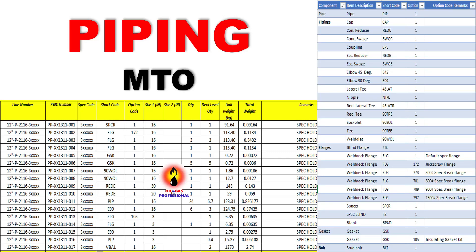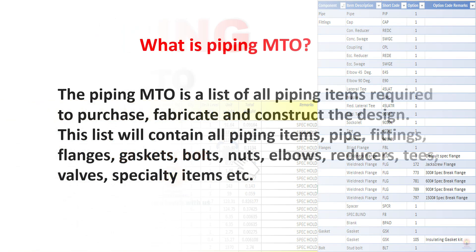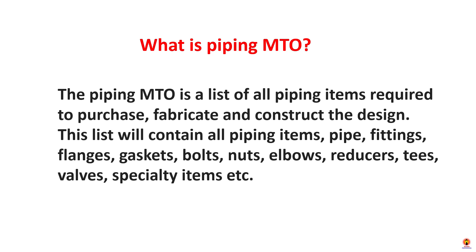Piping MTO. Before we see that, please subscribe and as a professional keep in touch with us. What is piping MTO? The piping MTO is a list of all piping items required to purchase, fabricate, and construct the design. This list will contain all piping items: pipe fittings, flanges, gaskets, bolts, nuts, elbows, reducers, special walls, specialty items, and so on.